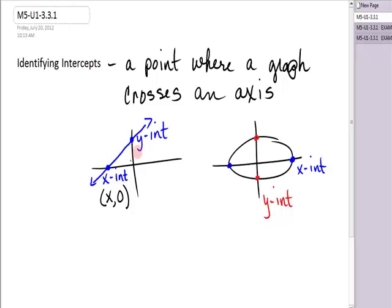Y-intercepts are always, you don't move right or left, you just go to the y-value. So y-intercepts are all zero, comma, y. All right, so let's use that idea as we look at our problems.